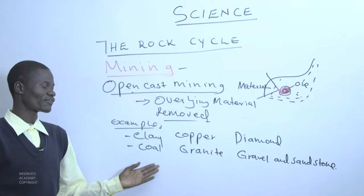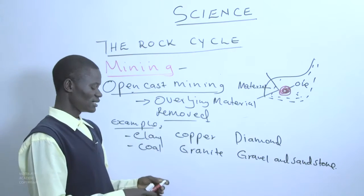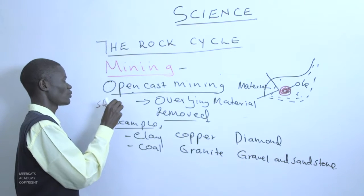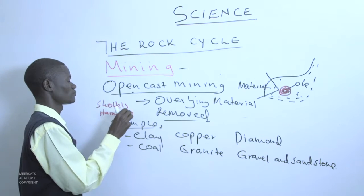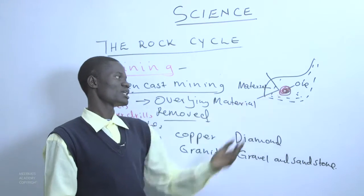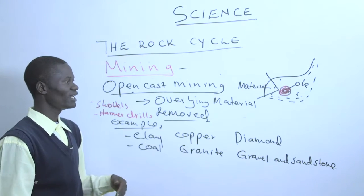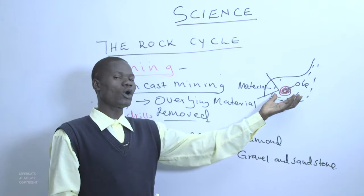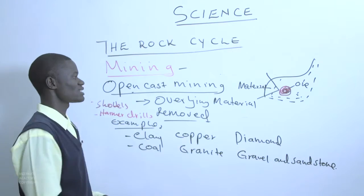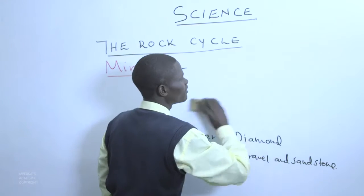The tools used in open cast mining include shovels and hammer drills. You first dig the material using a hammer drill or shovel, and when you reach the ore you extract it, then take it to the processing plant where it can be separated from other impurities. Therefore you will have your mineral formed and ready for use.